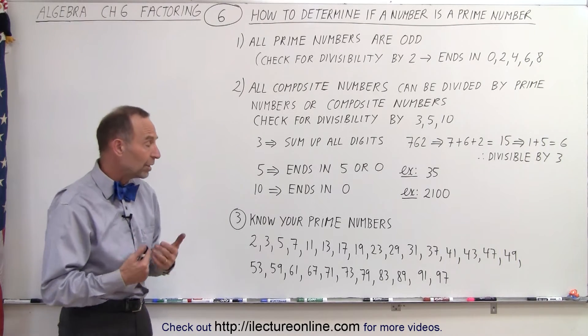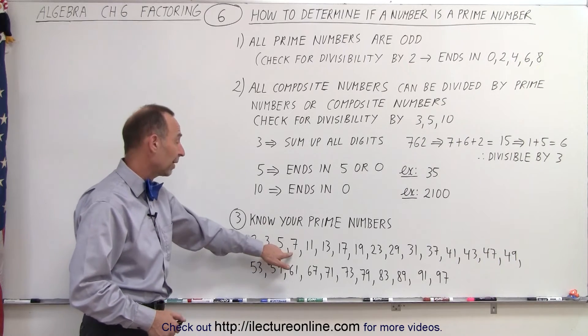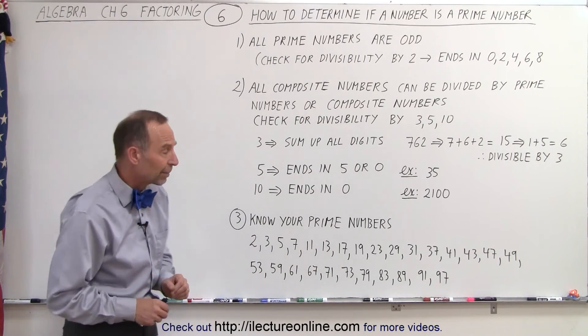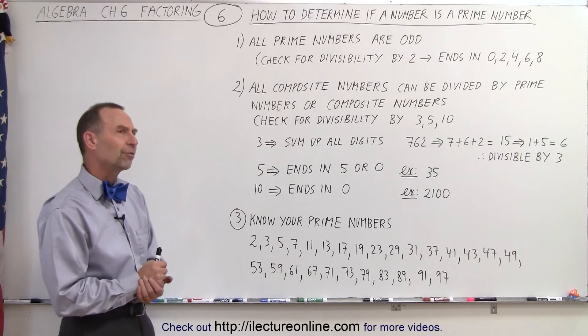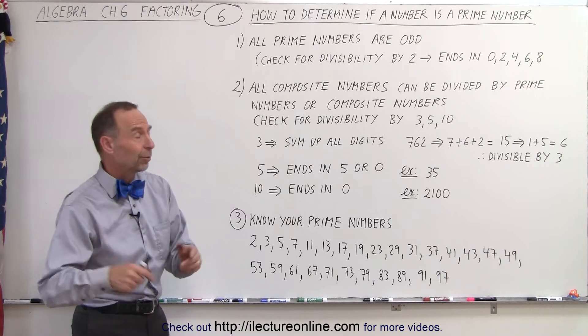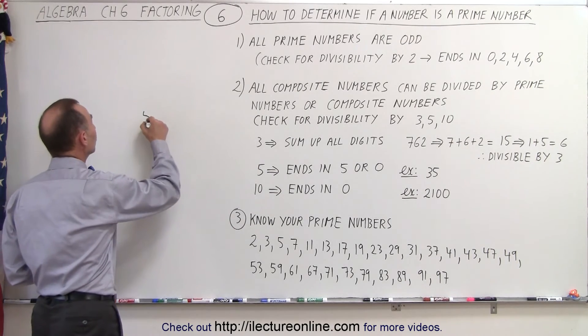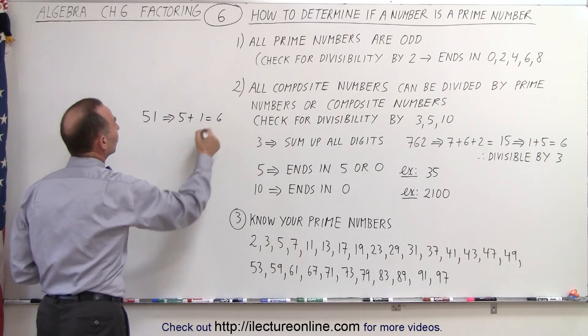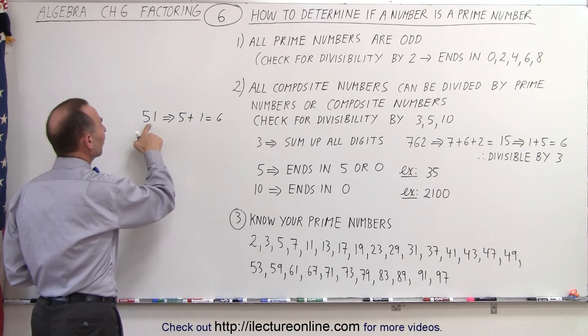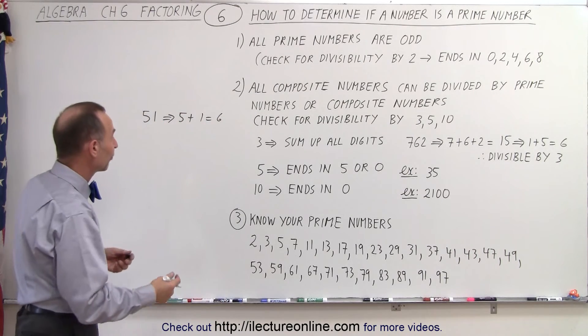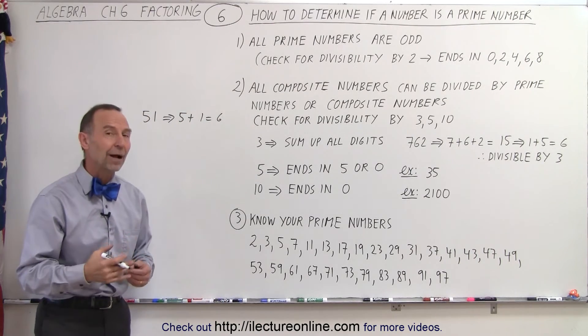But other things that you should also do when you have a number is to see if it's divisible by 7, by 11, by 13, by 17, which are the smaller prime numbers. For example, the number 51. Well, we know 51 is divisible by 3, so that would be an easy check, because we can see that 5 plus 1 equals 6, but also we can see that 51 is divisible by 17, which is a prime number, and therefore 51 cannot be a prime number itself.